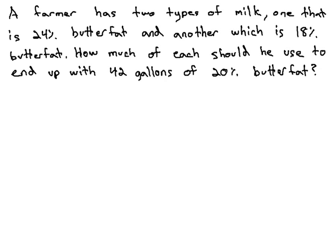A farmer has two types of milk. One is 24% butterfat, and another which is 18% butterfat. How much of each should he use to end up with 42 gallons of 20% butterfat?